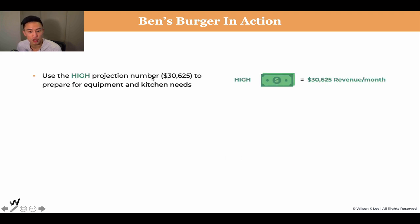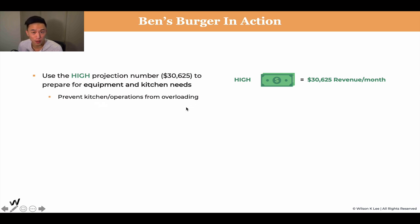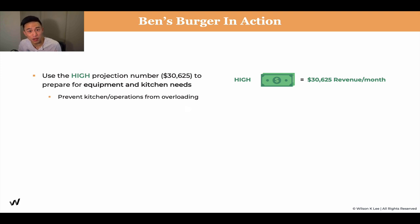Use the high projection number — $30,000 — to prepare your equipment and kitchen needs, so your operations don't collapse from overloading. A prime example of a mistake we made with our ice cream shop: we never accounted for making a really big amount of money and having a lot of traffic. We bought the cheapest ice cream machine, and because we had lineups out the door for months, we had to upgrade. In turn, we spent more than $30,000 to upgrade to a new machine, tear out our counters, and install the new one. That was a costly mistake because we never accounted for this scenario — I don't want that to happen to you.